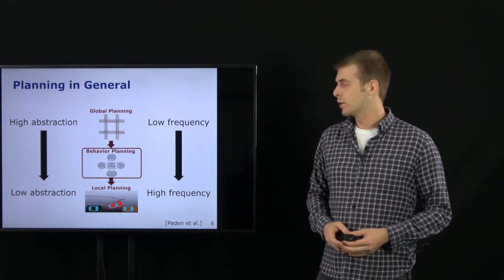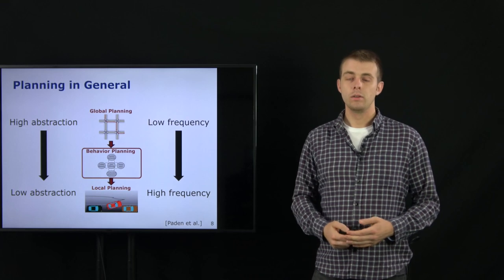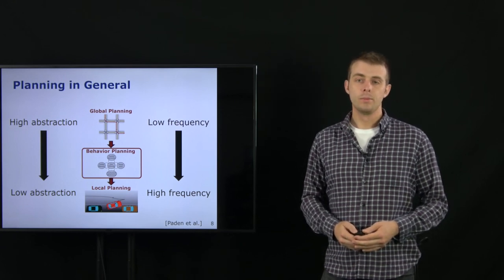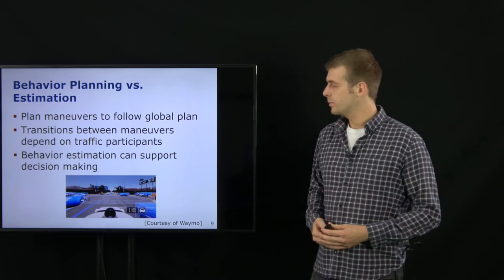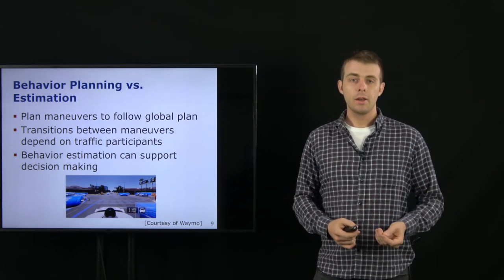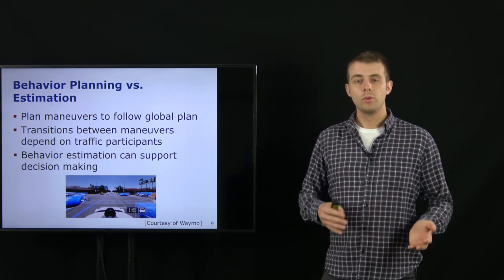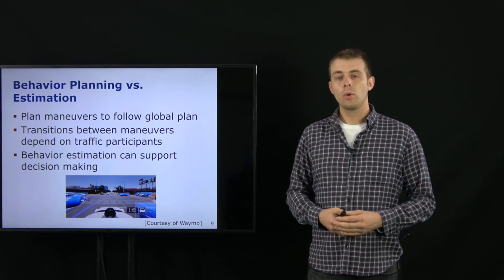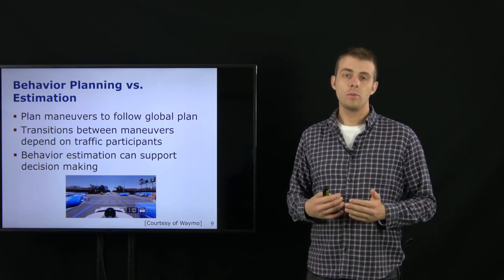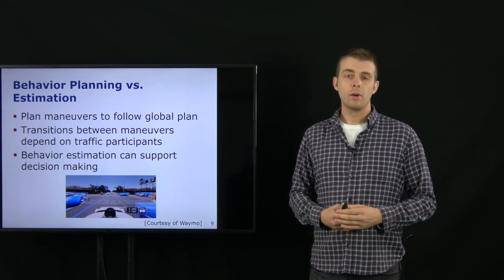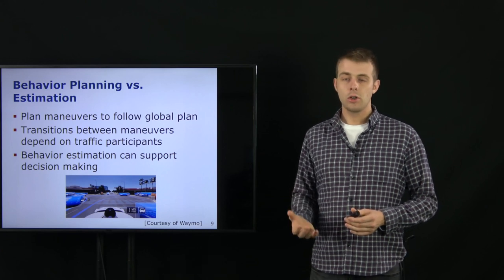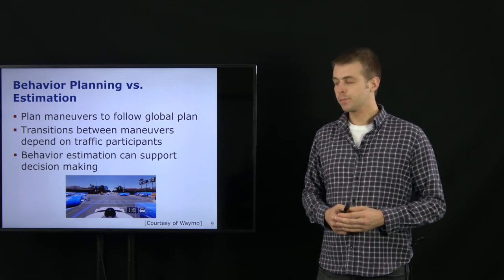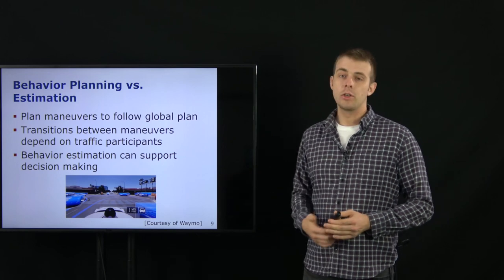Behavior estimation can be considered part of the behavior planning — it supports decision making, because in order to decide which maneuver to take we need to know what other traffic participants are going to do. The behavior planning plans a maneuver to follow the global plan, and these transitions depend on traffic participants, as seen in the video where our decision to yield or go straight depended on what the yellow car would do.